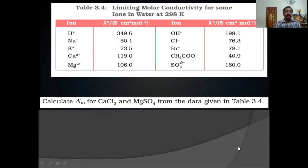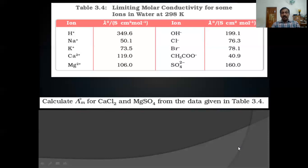Similarly you can find out the molar conductance of CaCl₂. If you want to find out the molar conductance at infinite dilution of CaCl₂, there is a point to note: CaCl₂ on dissociation gives 1 Ca²⁺ and 2 Cl⁻. So the molar conductance at infinite dilution of CaCl₂ equals molar conductance of Ca²⁺ plus 2 times the molar conductance of Cl⁻.